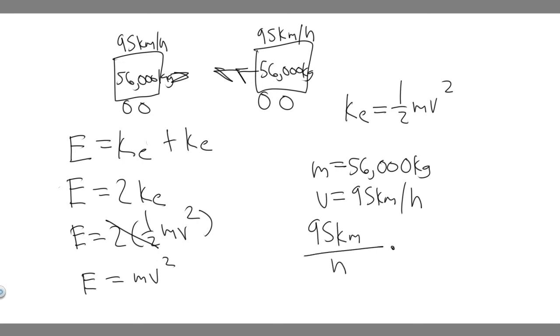So 95 kilometers per hour. There's going to be 1,000 meters for every 1 kilometer, so that'll cancel the kilometers. And then for every 1 hour, there's 3,600 seconds, because there's 60 seconds in a minute, 60 minutes in an hour. So just do 95 times 1,000 divided by 3,600, and you'll get 26.3888. I'm just going to round it to 26.389 meters per second.